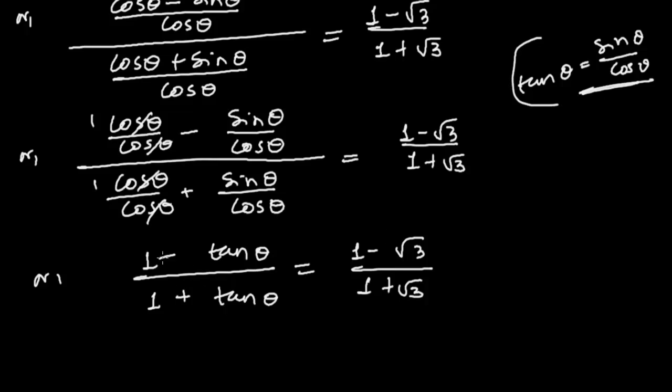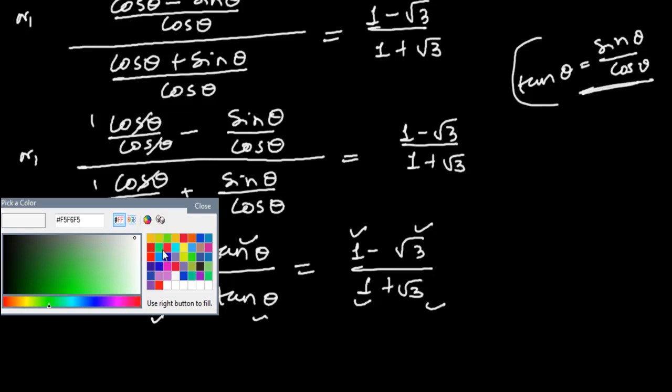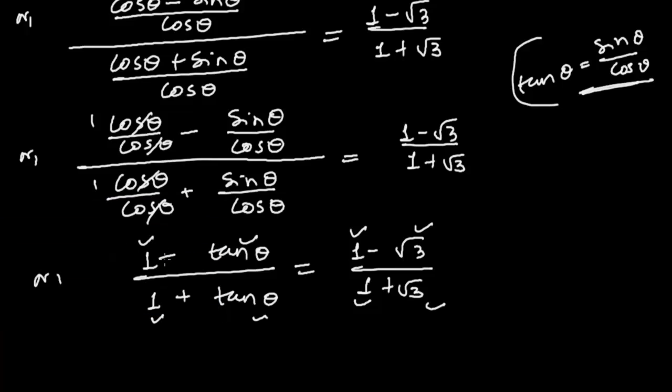So now just see, observe this pattern. It's 1 - tan θ, 1 - √3, 1 + tan θ, 1 + √3. Just see these both expressions, they are almost same.